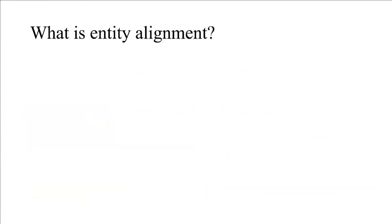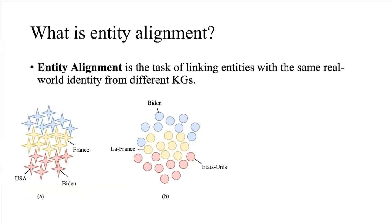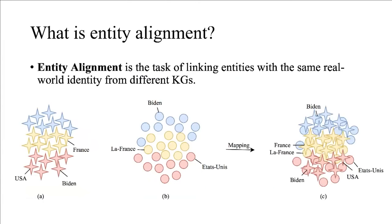What is entity alignment? Entity alignment is the task of linking entities with the same real-world identity from different knowledge graphs. A is the English embedding space, B is the French embedding space, and C is the mapping between them. This process is entity alignment.